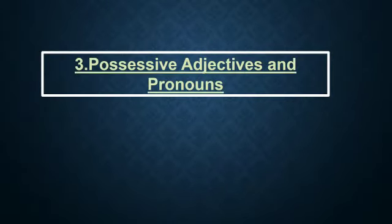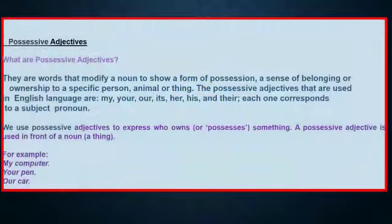Hello children, in this video you will learn about possessive adjectives and pronouns. Possessive adjectives are words that modify a noun to show a form of possession, a sense of belonging or ownership to a specific person, animal, or thing. We can also say that possessive adjectives express who owns or possesses something. A possessive adjective is used in front of a noun.